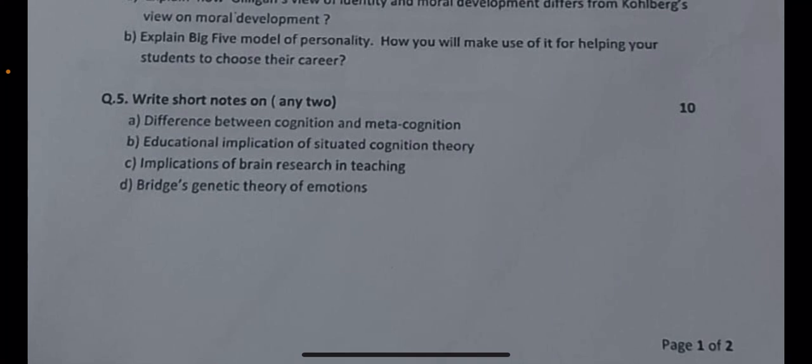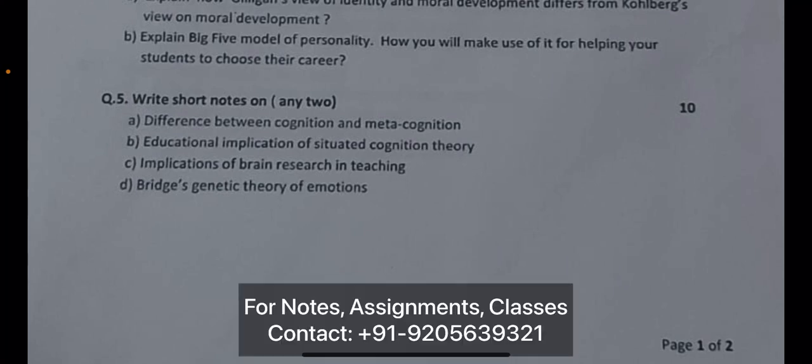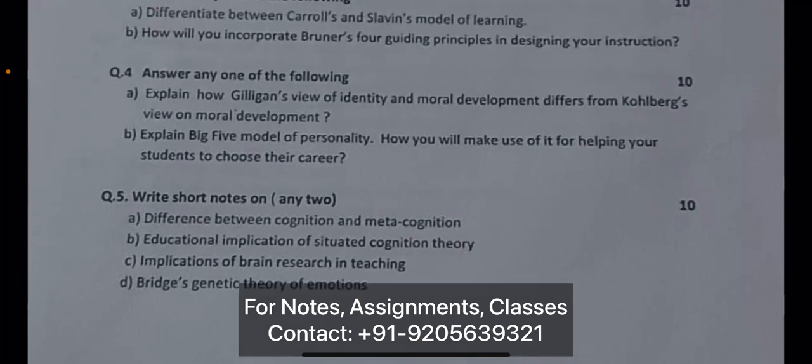Question number five: write short notes on any two of the following. Part A: difference between cognition and metacognition. Part B: educational implications of situated cognitive theory. Part C: implications of brain research on teaching, and genetic methods of emotions.